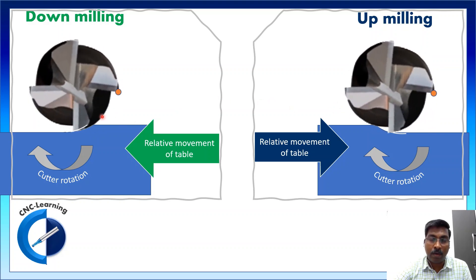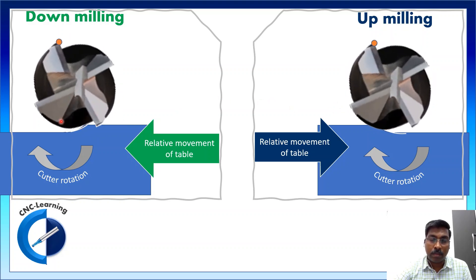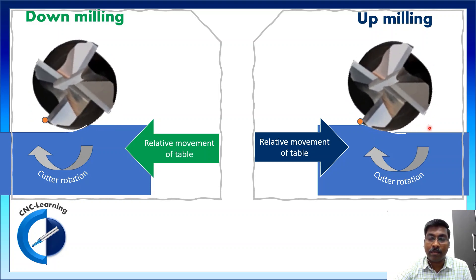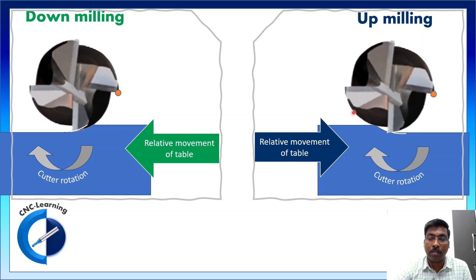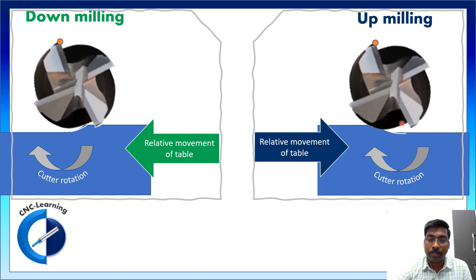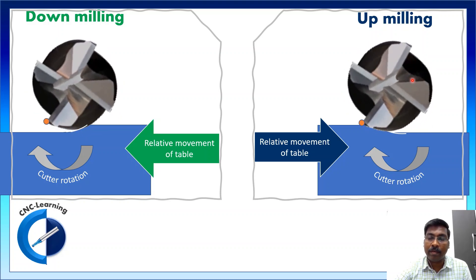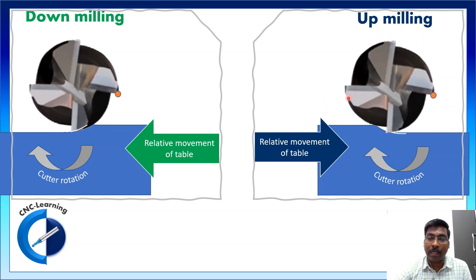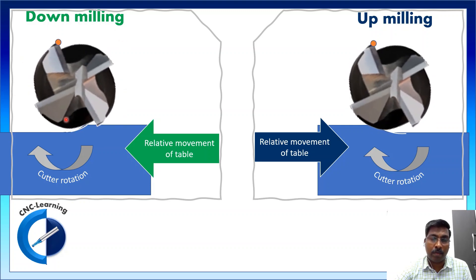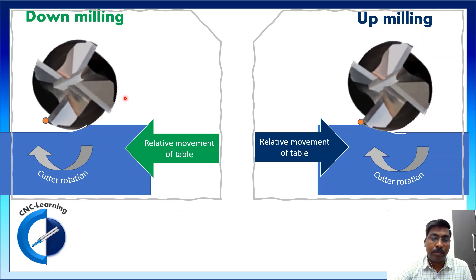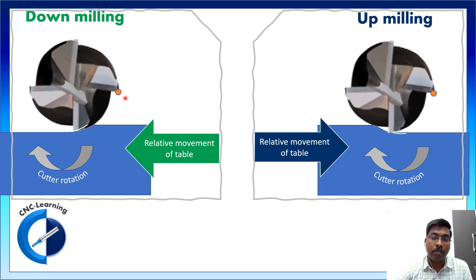In down milling there is an impact load — there is an impact when the cut starts. Whereas in up milling, being a gradual cut, the impact is very less. However, up milling is used only when clamping rigidity is very low. In most cases, down milling is preferable, with the major advantage being that the chip carries away most of the heat generated.